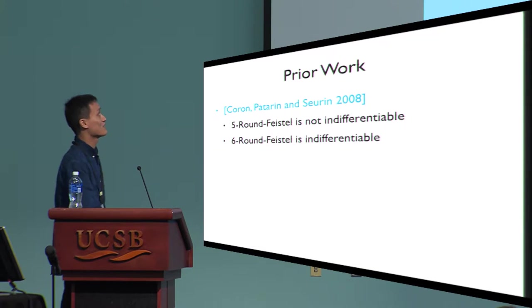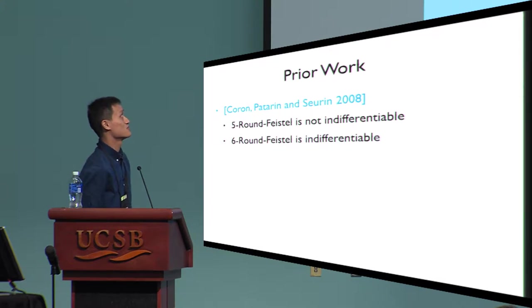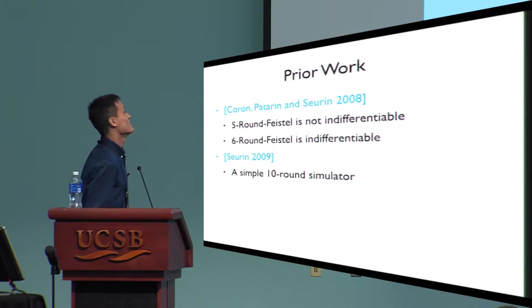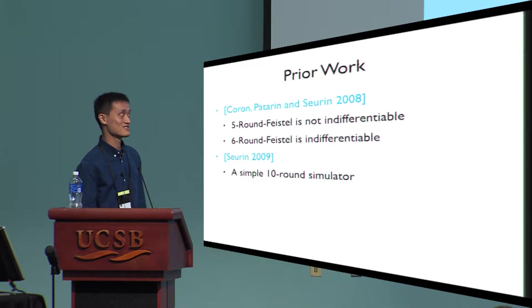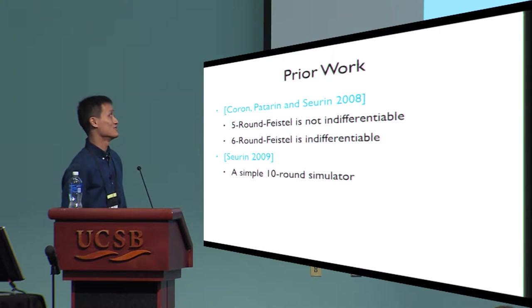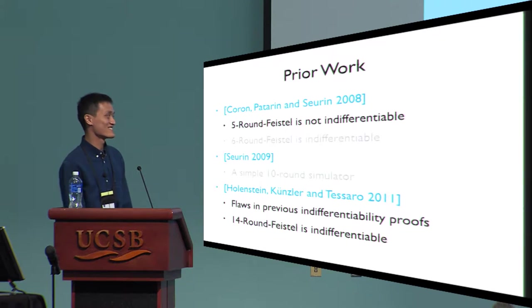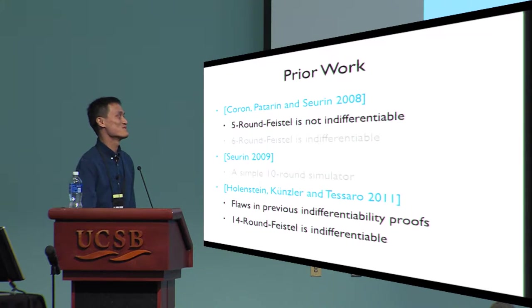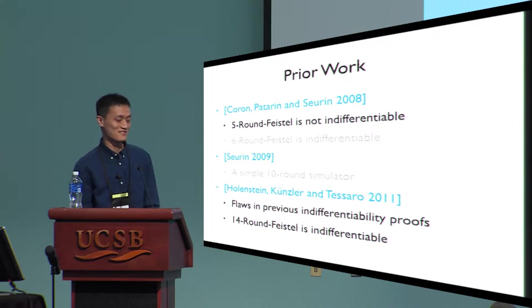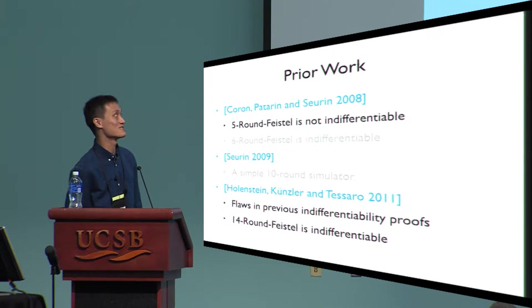The first work on indifferentiability of Feistel networks was done by Coron, Patarin, and Seurin in 2008. They proved that a 5-round Feistel network is not indifferentiable, and that 6-round is indifferentiable from a random permutation. Then in 2009, Seurin gave a simpler 10-round simulator in his PhD thesis. However, in 2011, Holenstein, Künzler, and Tessaro found a flaw in the previous proofs and showed that 14-round Feistel is indifferentiable. Whether 10-round Feistel is indifferentiable remained open at that point.